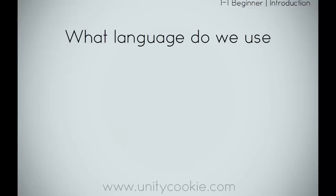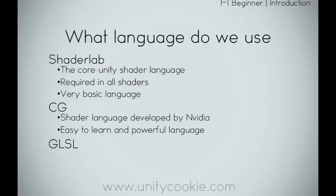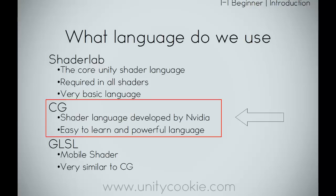So this is a programming course. What language are we going to use? First, ShaderLab — ShaderLab is the core Unity shader language, required in all shaders, and it is a very basic language. Then there is CG, which stands for C for Graphics, a shader language developed by NVIDIA. It's an easy to learn and powerful language. Then there is GLSL, a mobile shader language very similar to CG — you can convert a CG shader to GLSL with a click of a button. We're going to be focusing primarily on CG. ShaderLab is required, but our shader writing will primarily use the CG language. CG is the most common Unity shader language.